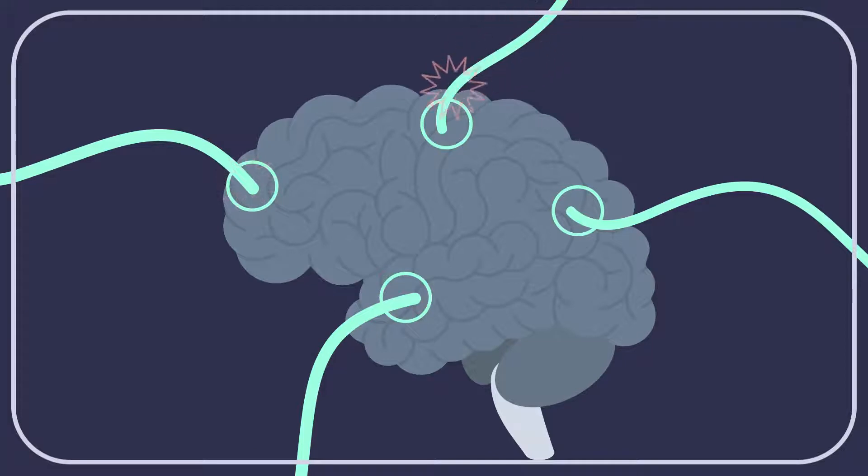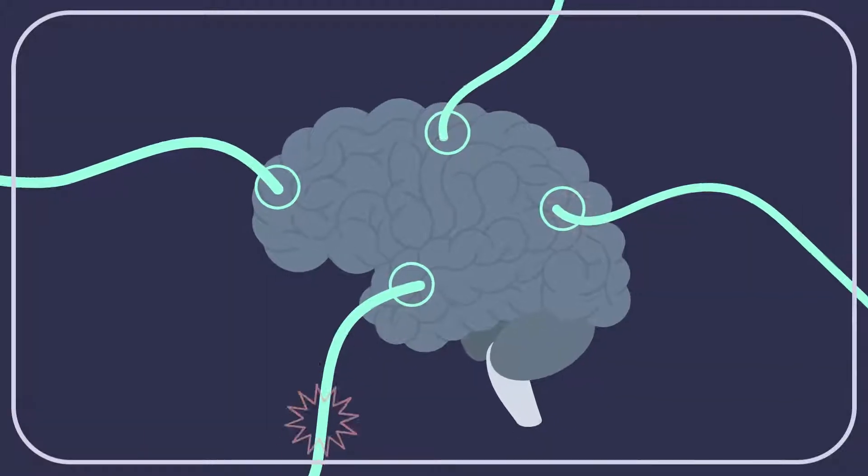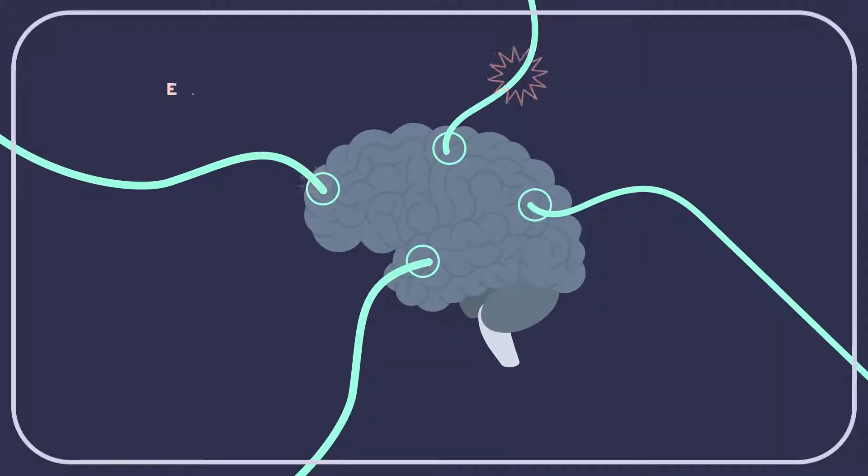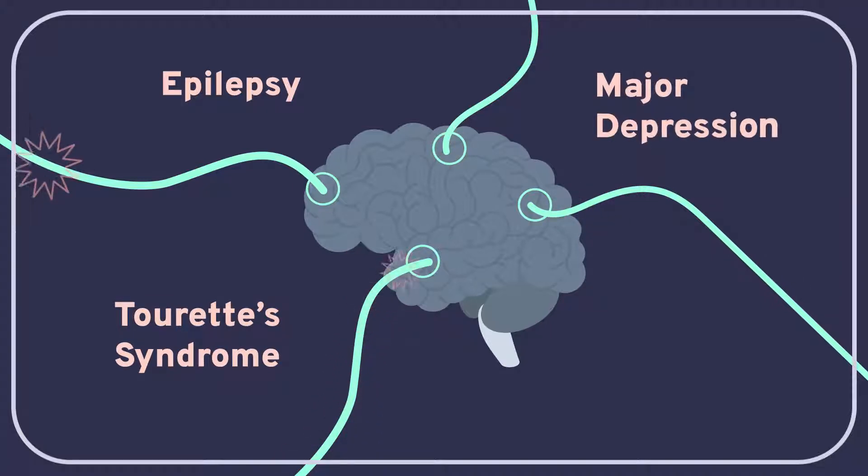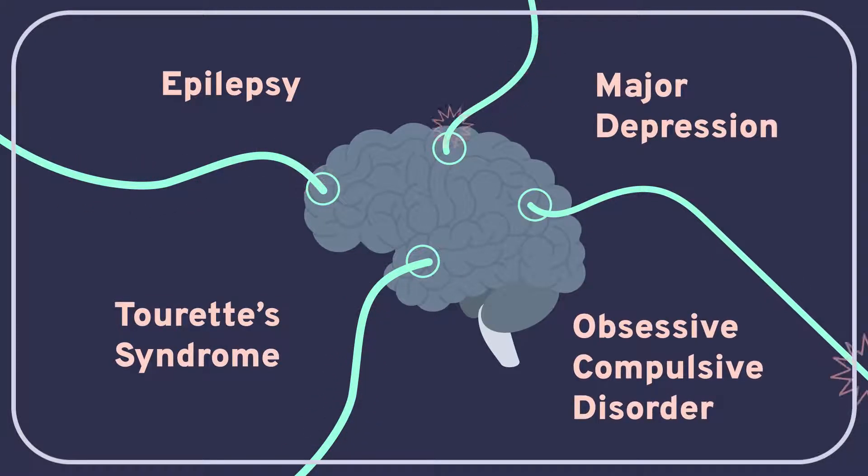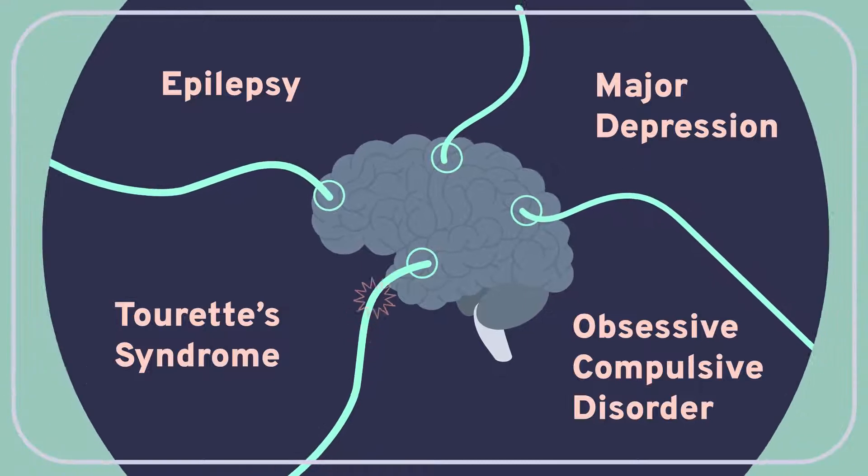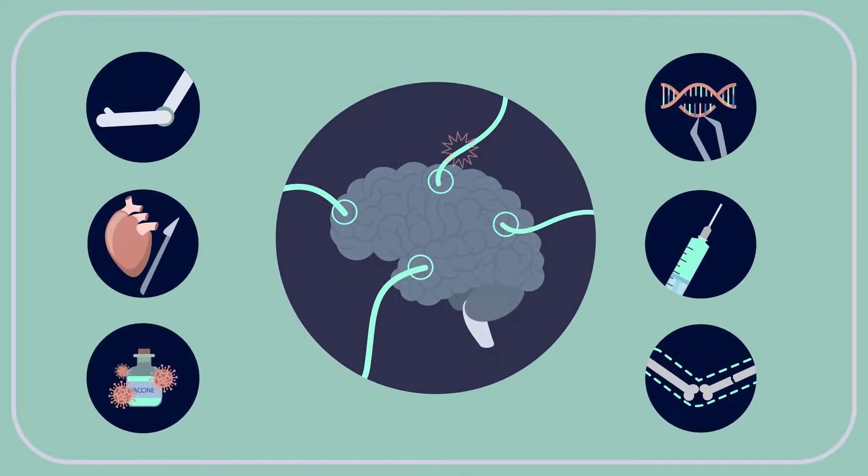This can be an effective treatment for patients with Parkinson's disease and may help with a variety of other conditions such as epilepsy, Tourette's syndrome, major depression, and obsessive-compulsive disorder. Deep brain stimulation is just one of the latest entries in humankind's long and ingenious history of medical treatment technologies.